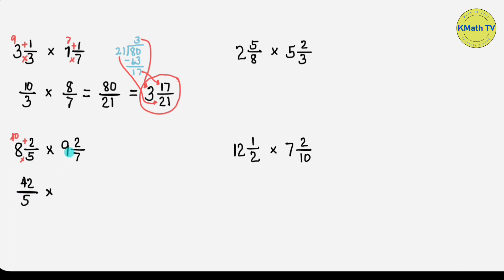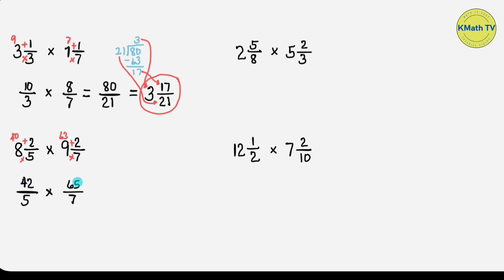Now let's convert the second mixed number. Multiply the denominator and the whole number: 7 times 9 equals 63. Then add the numerator plus 2: 63 plus 2 equals 65. This is the new numerator. We're done with the first step. The second step is to multiply the numerators and the denominators.